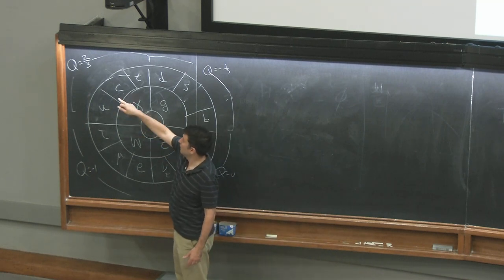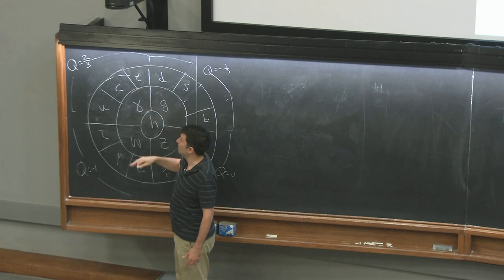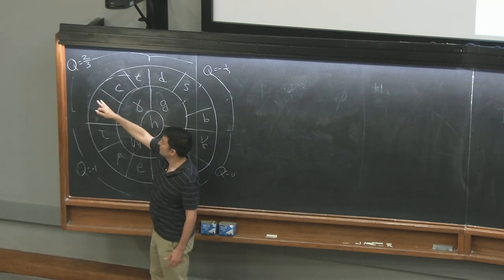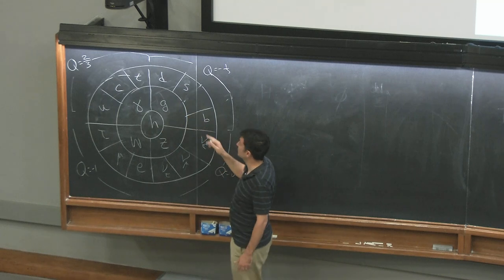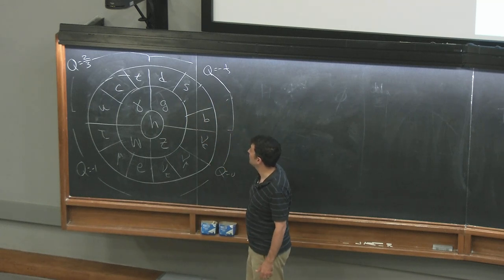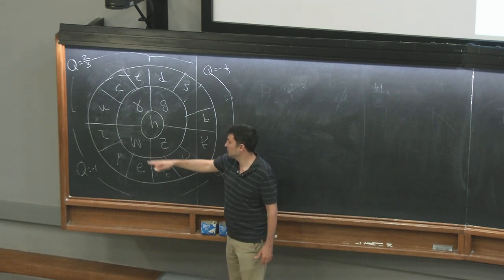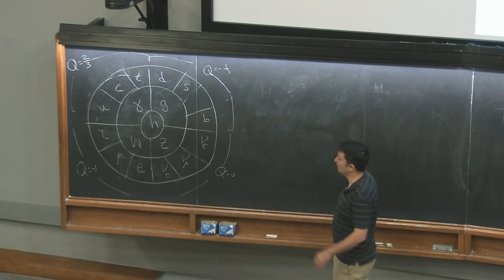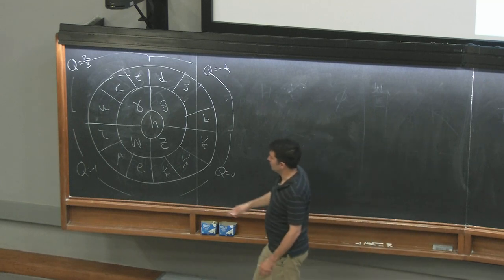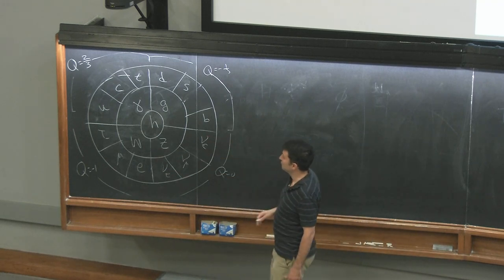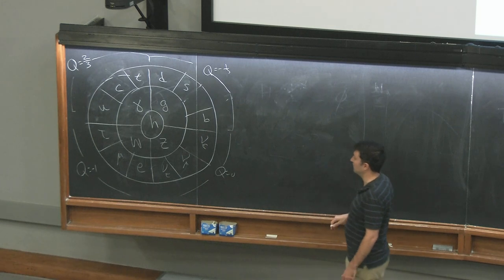The up, charm, and top are the up-type quarks, which all have charge plus two-thirds. The down-type quarks are down, strange, and bottom, which have electric charge minus one-third. We have the neutrinos and the leptons. The W has charge plus one, the Z has charge zero — that's why we put W and Z together. The photon and gluon also have no electric charge.